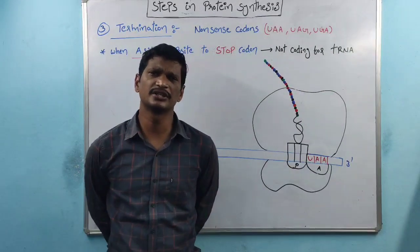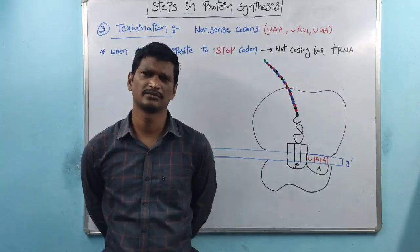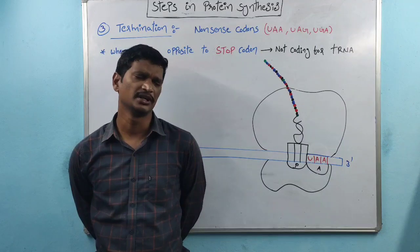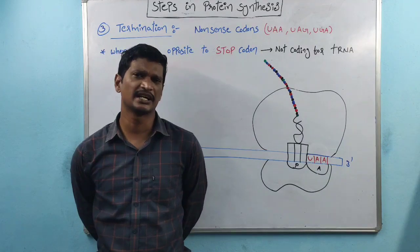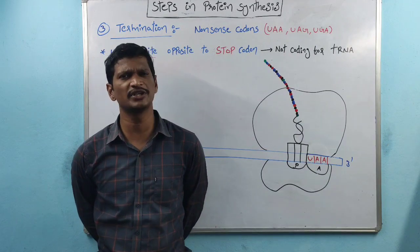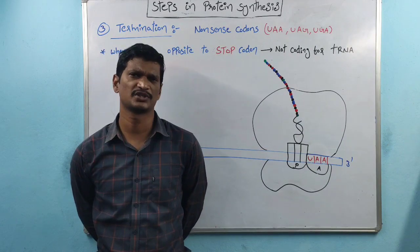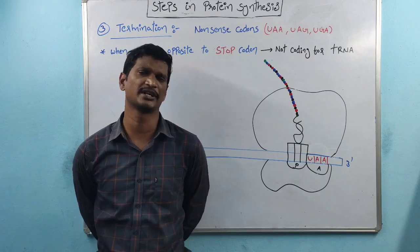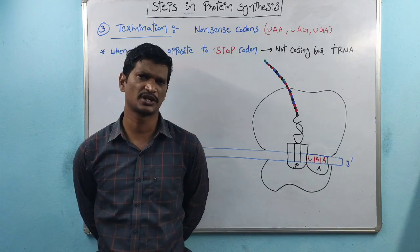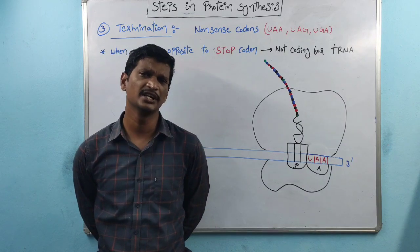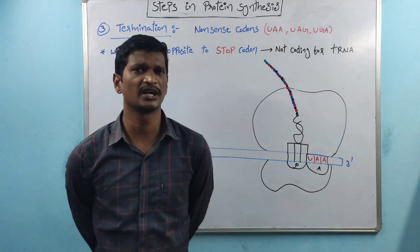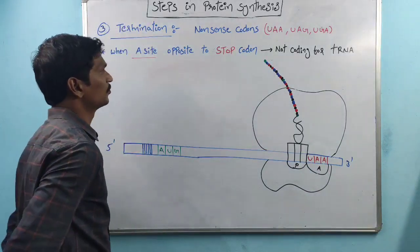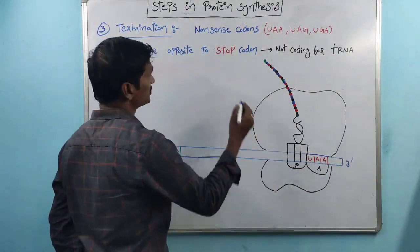Here, nonsense codons means they are not codes for aminoacyl-tRNA — that is, they are not codes for tRNA and not codes for amino acids. Instead, they are codes for the releasing factors.